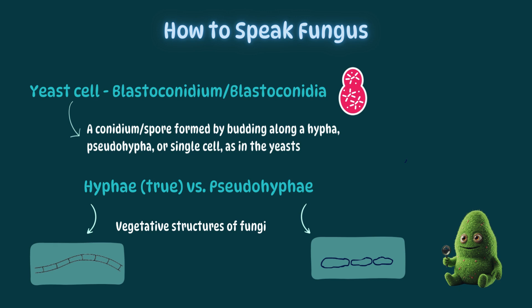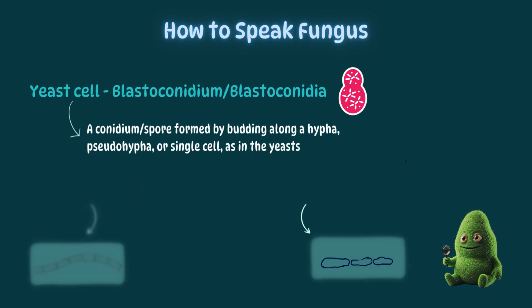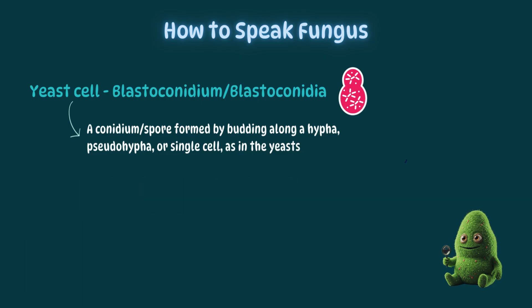Hyphae generally refers to true hyphae on the left. These have septations — cross walls — with no constriction. They look like ladders. Pseudohyphae on the right are false hyphae often associated with yeast. They have constrictions and look like sausage links. These are the vegetative, non-reproductive structures of fungi.